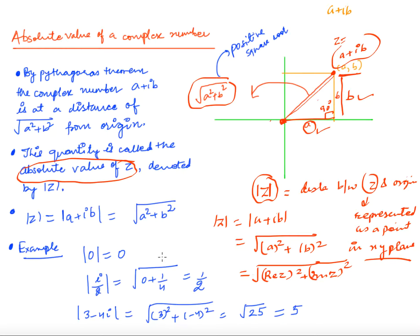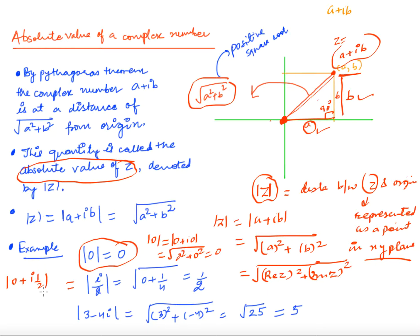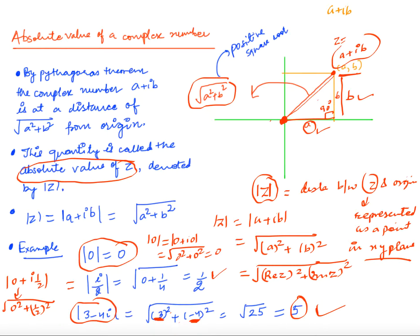For example: |0| equals zero, since 0 is 0 plus iota·0 and sqrt(0²+0²) = 0. For iota/2, which is 0 plus iota·(1/2), the absolute value is sqrt(0² + (1/2)²) = 1/2. For 3 minus 4·iota, the absolute value is sqrt(3² + (−4)²) = sqrt(9+16) = sqrt(25) = 5. This is how we define the absolute value of complex numbers.